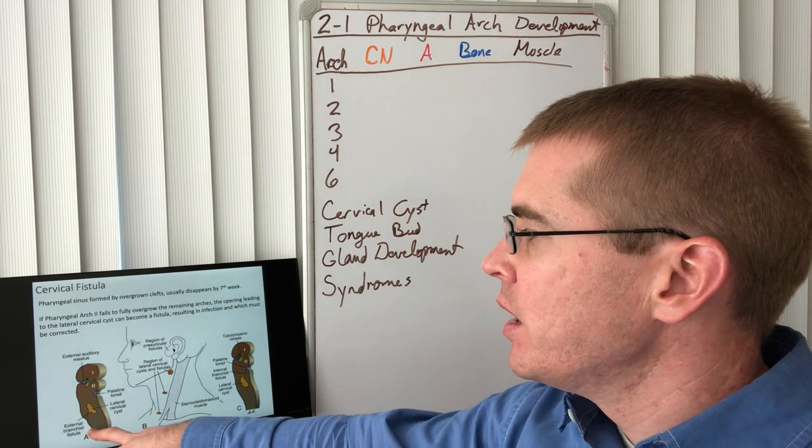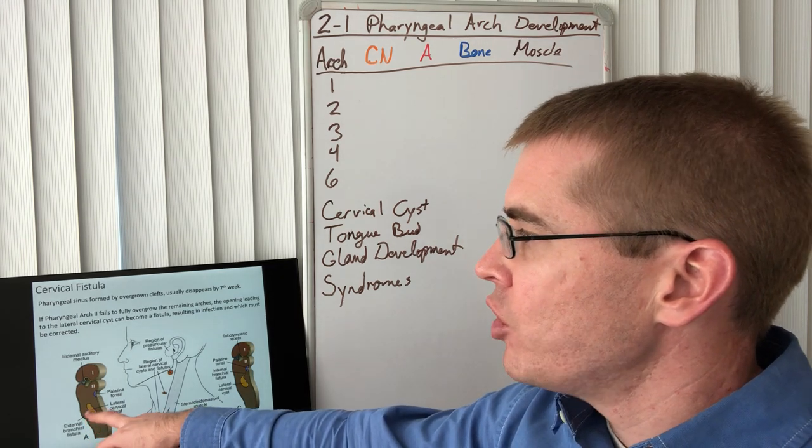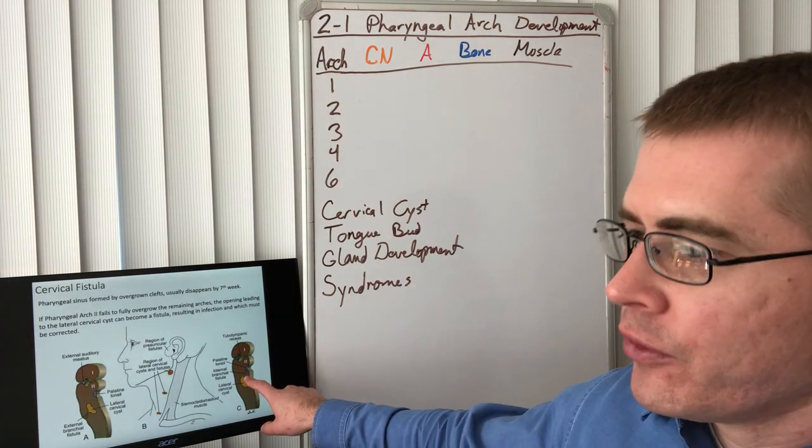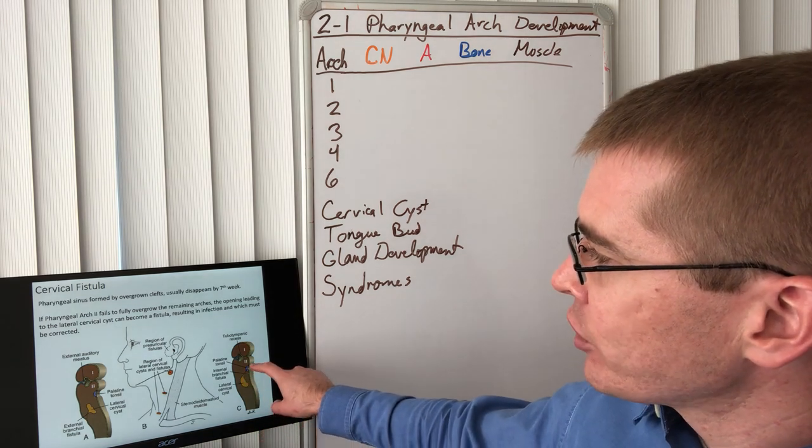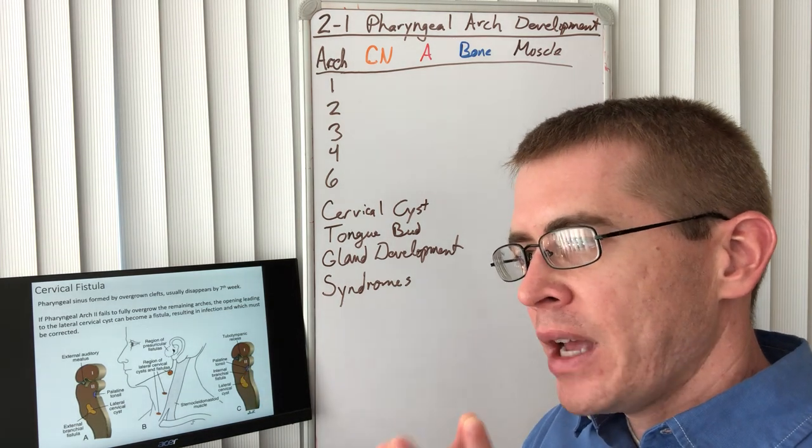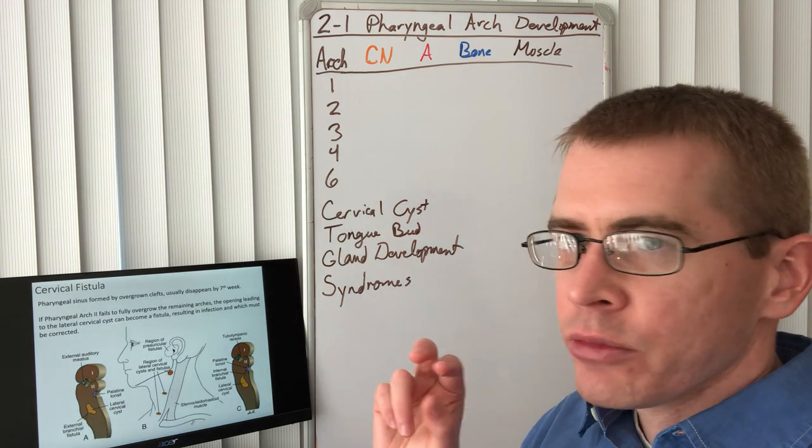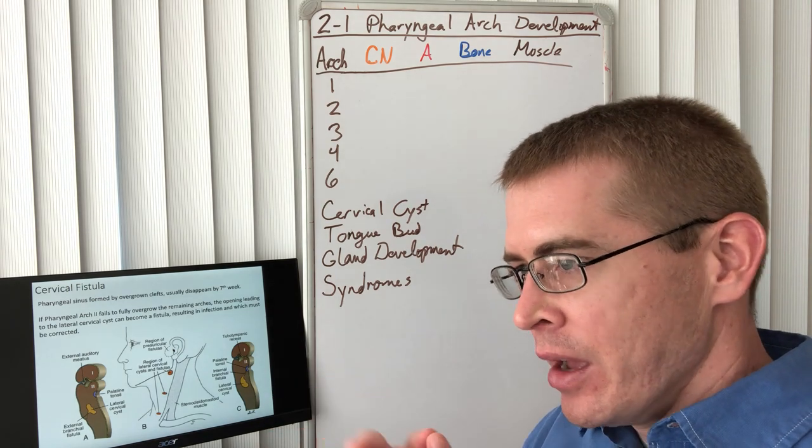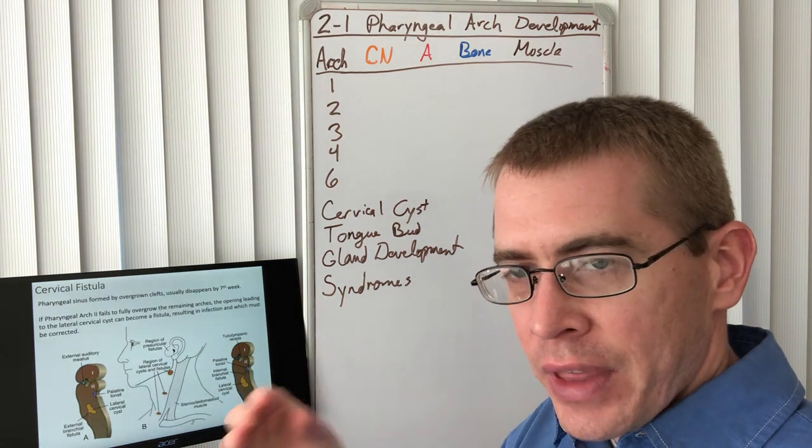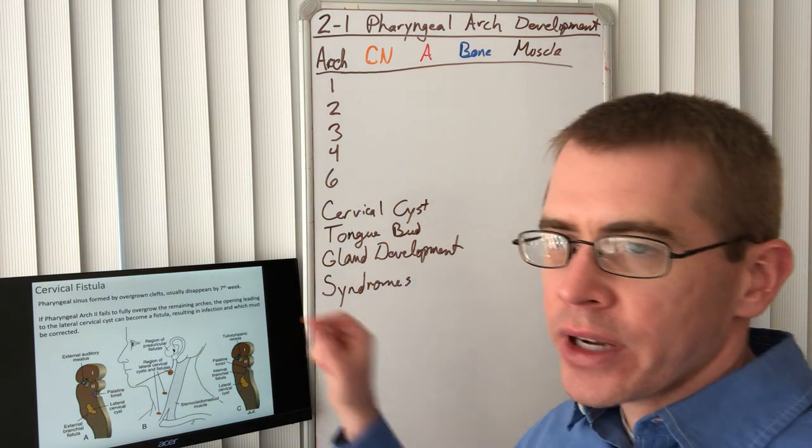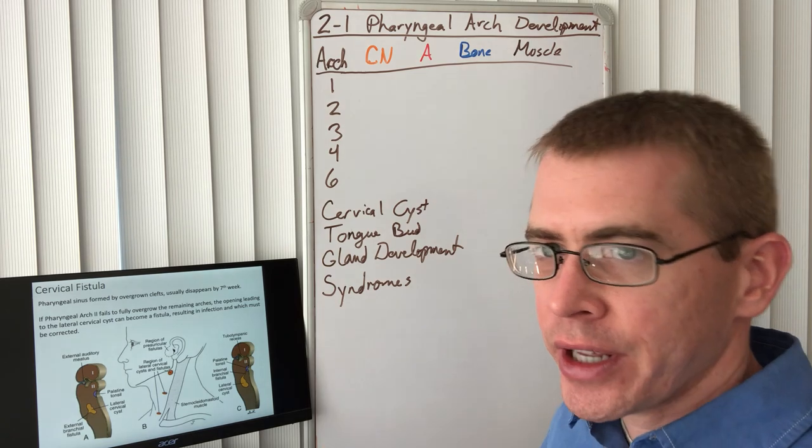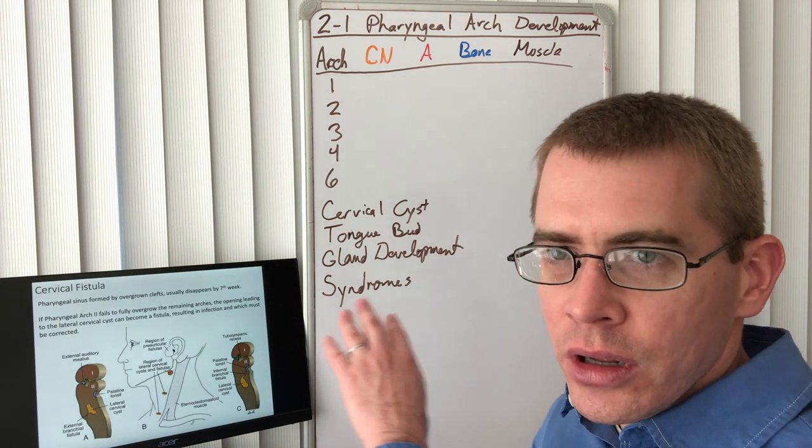That fistula can be caused by an incomplete overgrowth by the second pharyngeal arch. Here we have an example of an external fistula that's open to the external environment. So detritus can get in there. Here we have an example of an internal fistula into this pharyngeal sinus. That internal fistula commonly goes toward the second pharyngeal pouch. We'll learn in a minute, the second pharyngeal pouch forms the tonsils. So if the tonsils become infected, then that infection can easily travel through this fistula to infiltrate the lateral cervical cyst and cause issues. So these fistulas have to be surgically repaired if they exist.